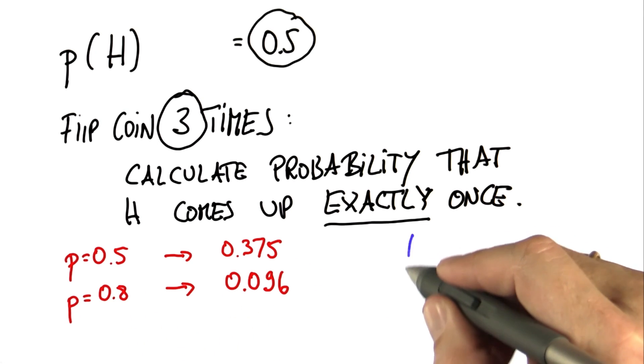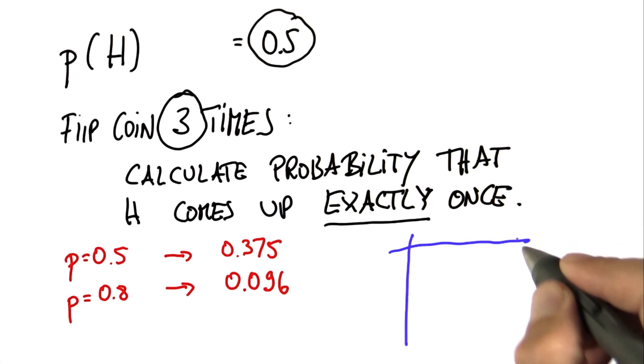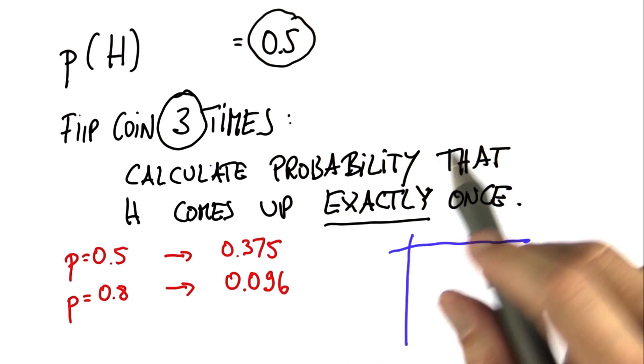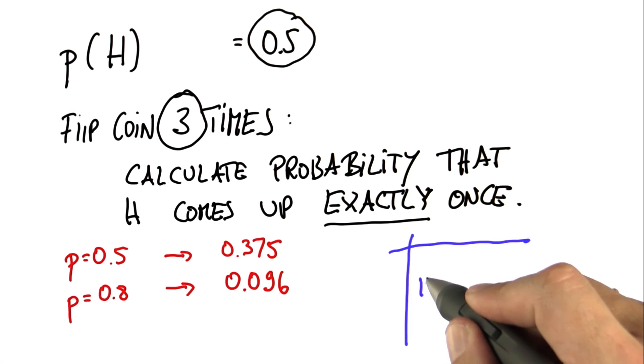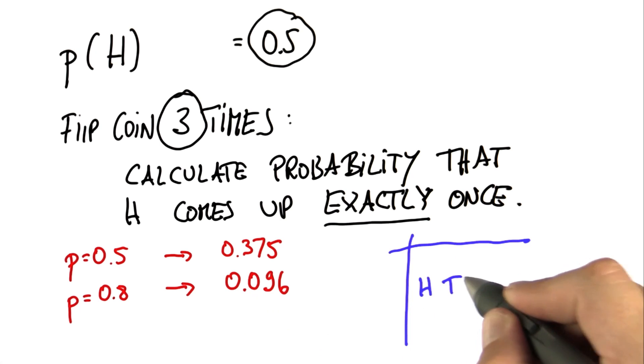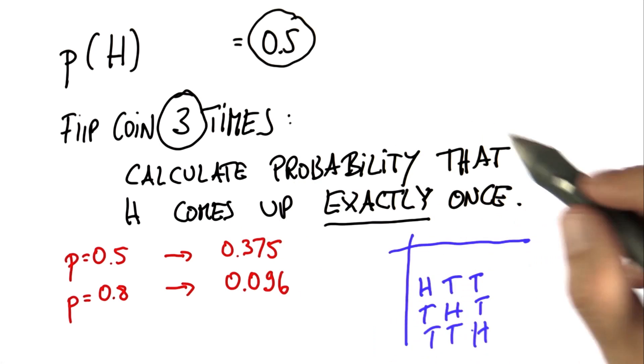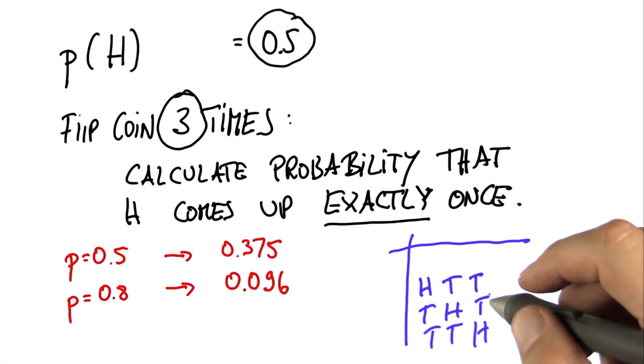So here's my result. When you build the truth table, you find that exactly three possible outcomes have had exactly once. It's HTT, THT and TTH. So of the eight possible outcomes of three coin flips, those three are the ones you want to count.